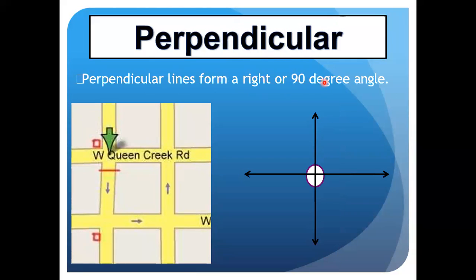Now let's talk about perpendicular lines. Perpendicular lines form a right angle, or a 90-degree angle, where they cross. You can see this on the map — the horizontal and vertical lines crossing at 90 degrees. Perpendicular lines form a right or 90-degree angle.